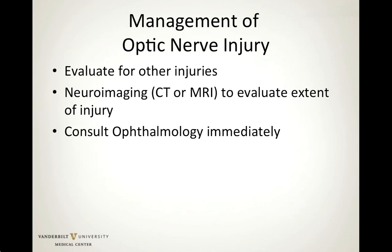Initial management of optic nerve damage includes evaluation for other injuries that may need to be addressed first, which includes ordering neuroimaging. Since these patients often present to the emergency department, ophthalmology should be consulted immediately. Damage to nerve fibers and axons is usually irreversible; however, there can be partial recovery of vision over time with no treatment. Some therapies to reduce inflammation and swelling have been tried, but these remain controversial.